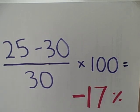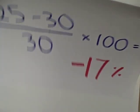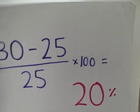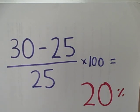Let's suppose then that we are now down to 25 and in the following year we increase that back up to 30, recovering everything that we have lost. Would that be a 17% percentage increase? Not really, because our base has changed.